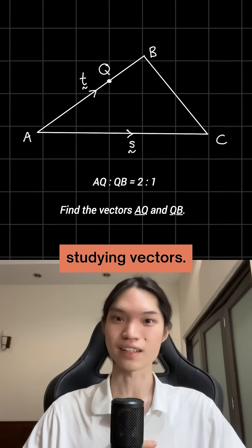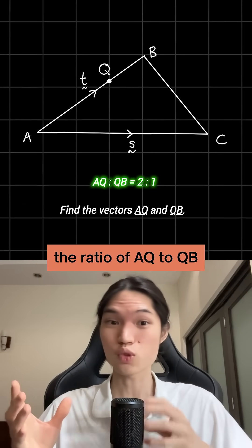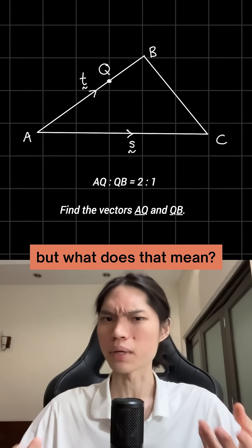Here's a quick tip if you're a math student studying vectors. In this shape, it's mentioned that the ratio from AQ to QB is 2 to 1, but what does that mean?